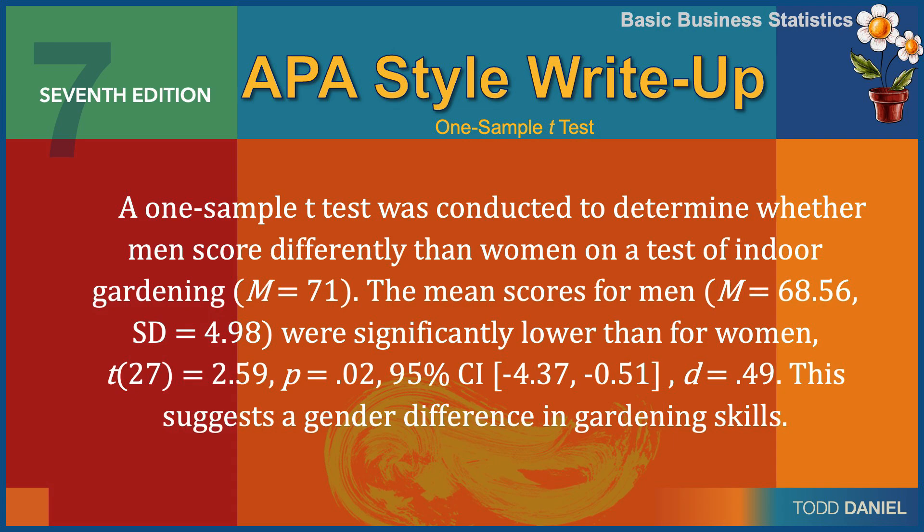Or statistically significantly lower than for women. t(27) = 2.59, p = .02, our 95% confidence interval, and our Cohen's d effect size. This suggests a gender difference in gardening skills.